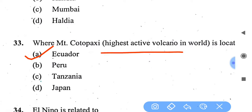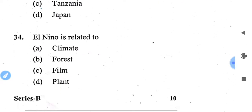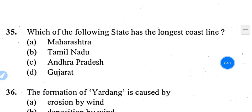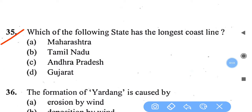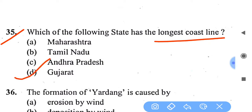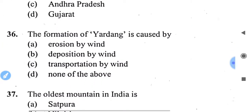It is an active volcano. Next question: which of the following states has the longest coastline? The answer is Gujarat. Next: the formation of yardang is caused by — the right answer is erosion by wind.